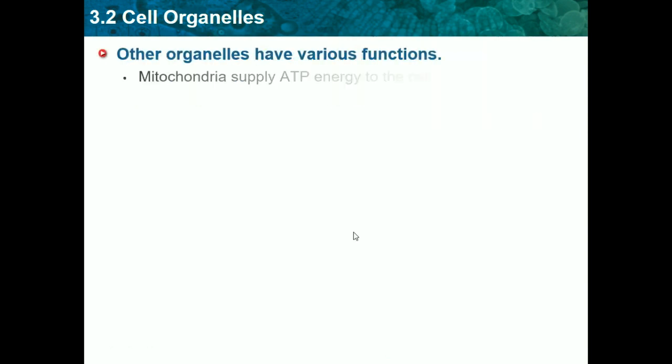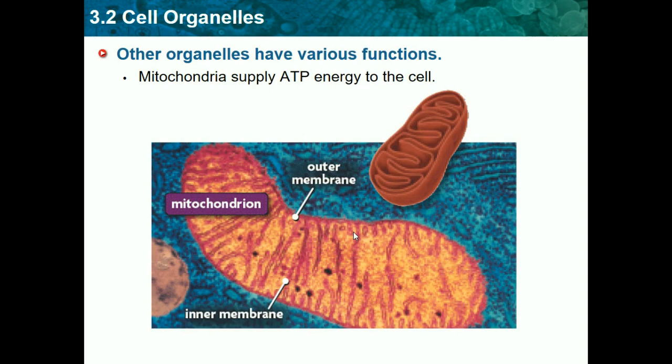The mitochondria is another organelle that makes ATP, which is energy for the cell. It's called the powerhouse of the cell and looks like a bean with a bunch of folds inside. It converts sugar into energy.